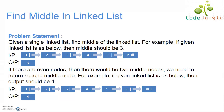There can be two scenarios while doing so. First, the linked list can have an even number of nodes. Second, the linked list can have an odd number of nodes.